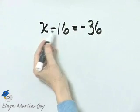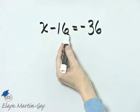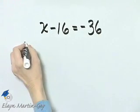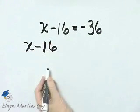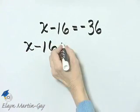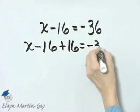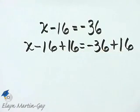This is the variable x minus 16, so to undo this subtraction, I will add 16 to both sides of the equation. There's the left side, I'm adding 16. Here's the right side, and I'm adding 16.